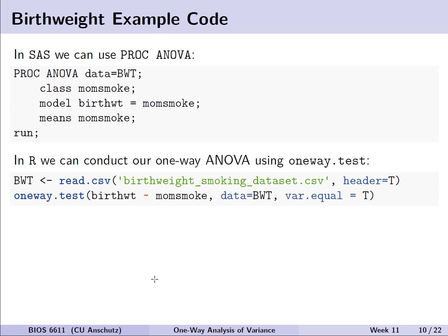We'll see some examples in R, but I want to provide code in both SAS and R. In SAS, one nice way is to use the proc ANOVA procedure, specifying the group variable with a class statement, the model we're fitting, and requesting group means. In R, one of the most useful ways — especially for the upcoming section — is to use the oneway.test function, where we can specify var.equal equals TRUE as the assumption for the standard one-way ANOVA.